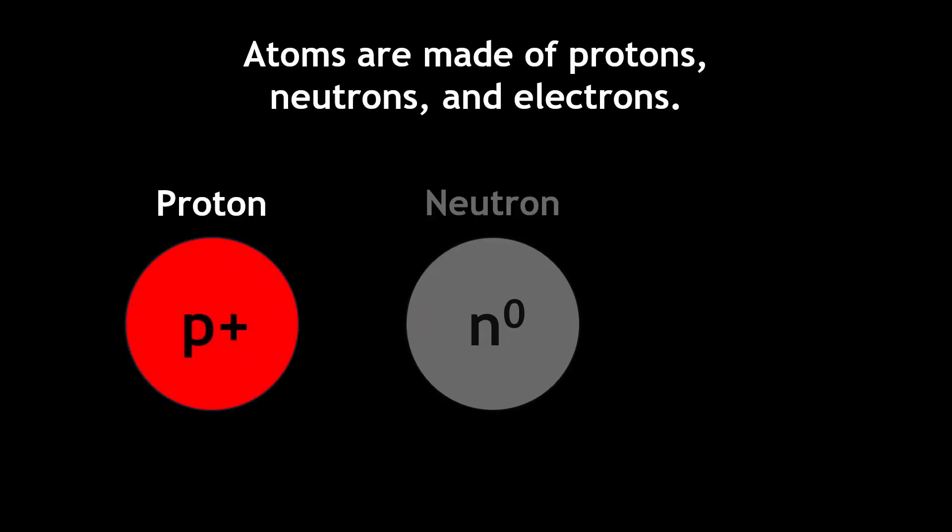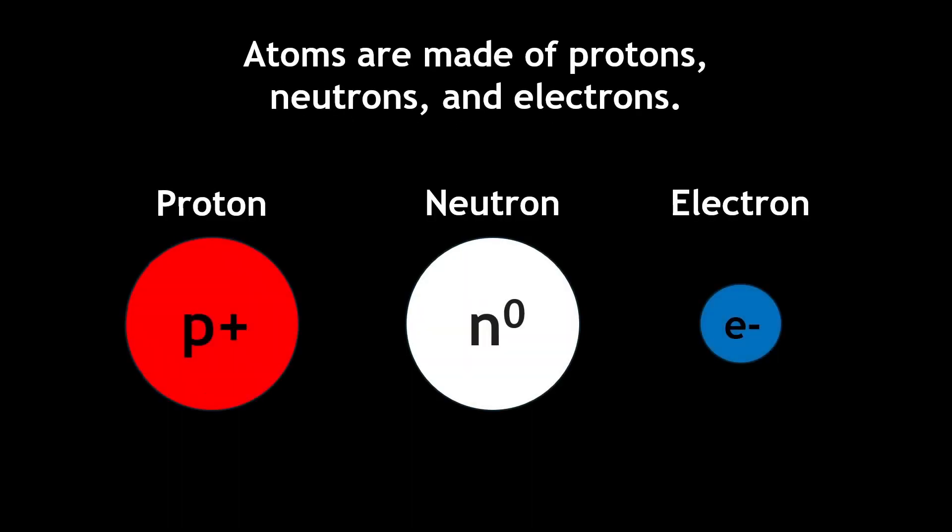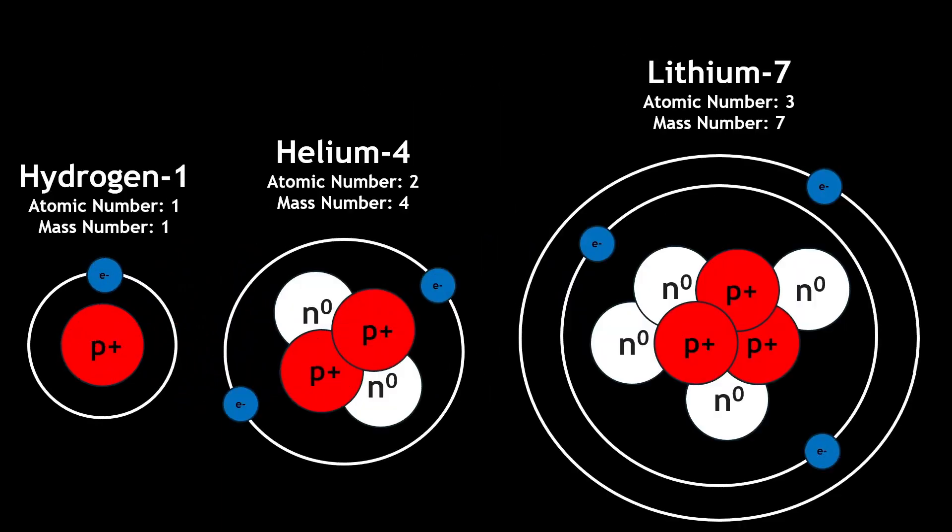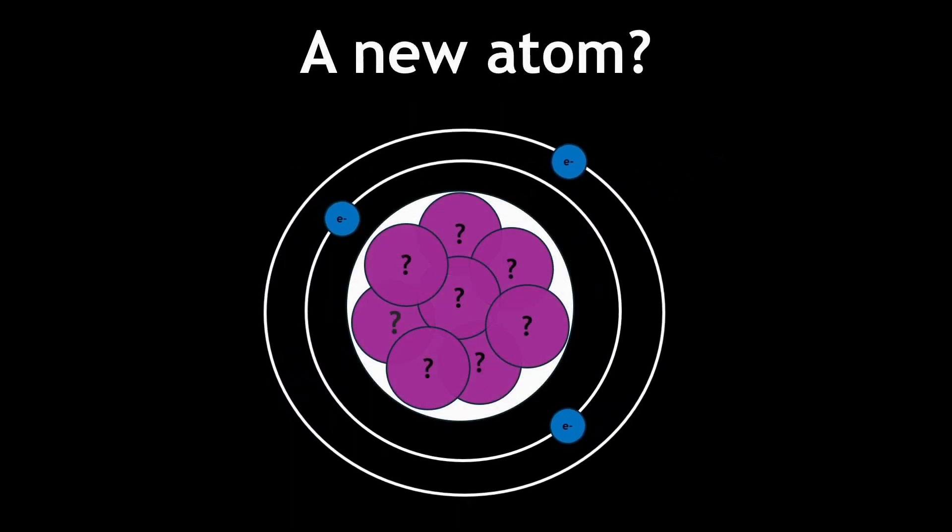Atoms are typically made of protons, neutrons, and electrons, which determine their atomic and mass number. But what if I told you that there is an entirely different type of atom which contains completely different particles?